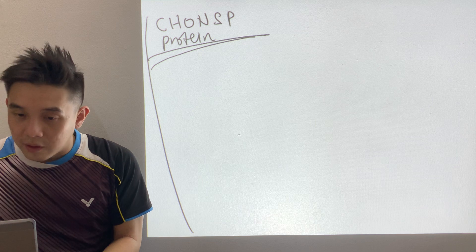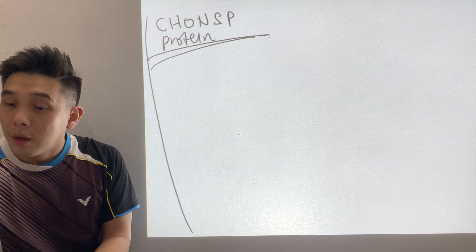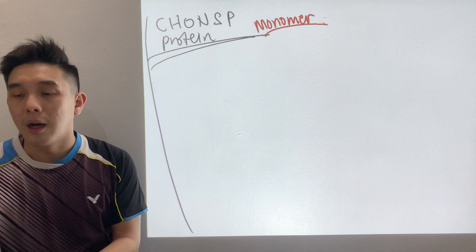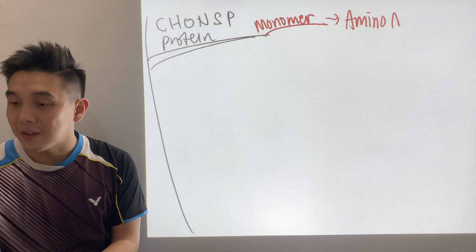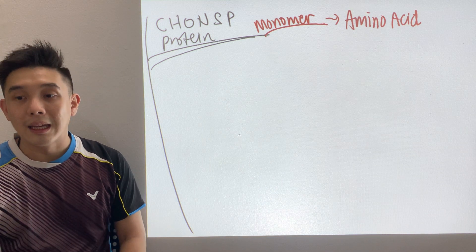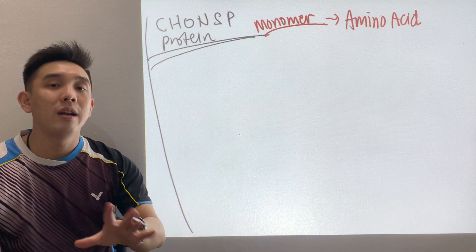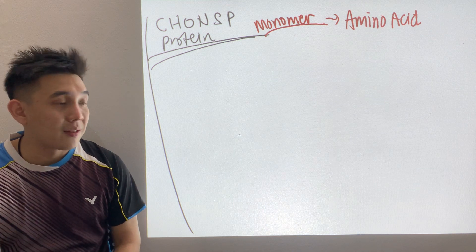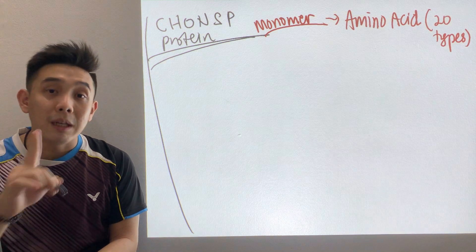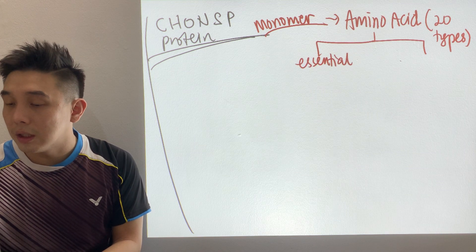Now, some basic stuff you have to know. First of all, what is the monomer of protein? The answer is amino acid. Now, if I were to ask you how many types there are — some of you might think 2, some might think 20. There are 20 types of amino acid, and this is divided into 2 groups: essential and non-essential.